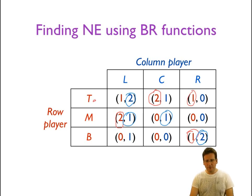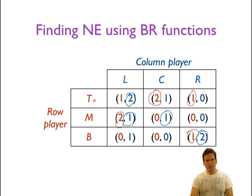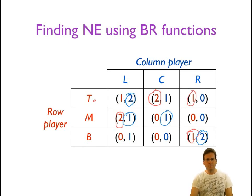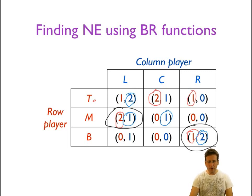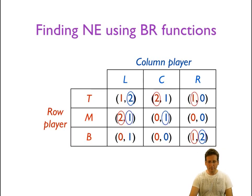Now take a look at the best response functions as shown by the way we circle the payoffs. Any cell that has both payoffs circled is a Nash equilibrium, because it is the best response for each player to the other player's action choice. So middle-left is a Nash equilibrium of this game, and bottom-right is also a Nash equilibrium of this game.